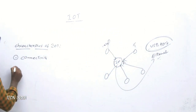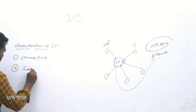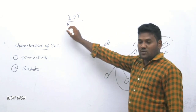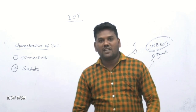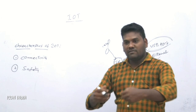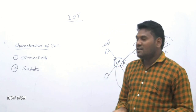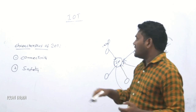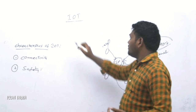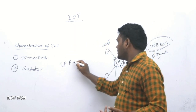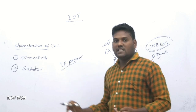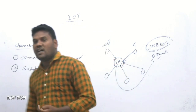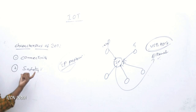The second characteristic is safety. Safety is very important because we communicate with the internet, and there can be cyber crimes — losing data from our devices through the internet. We need to secure the internet using IP protocols (internet protocols) to secure information from anywhere. That is also one of the main characteristics of IoT.